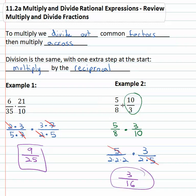What's important that we see here is that first we divided out the common factors and then multiplied across. And of course with division we had to change it to multiplying by the reciprocal. This is how we divide fractions. We're going to extend this to see how we divide rational expressions.